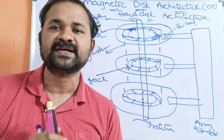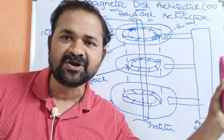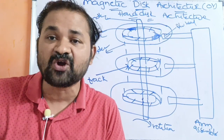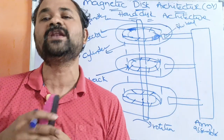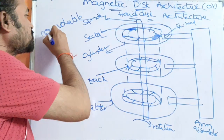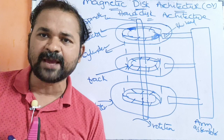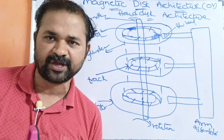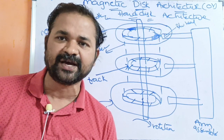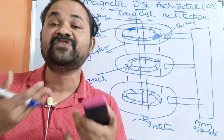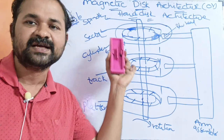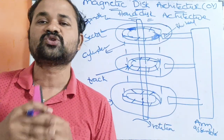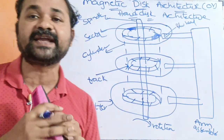Hard disk is also called as a secondary storage device because we can store data permanently in the computer. That means if we switch off the computer, then the contents of the hard disk won't be lost. Hard disk is also called as non-volatile memory. We have two types of memory: volatile memory and non-volatile memory. Main memory or RAM is called as volatile memory because when we switch off the computer, the contents of RAM will be lost. But the contents of the hard disk won't be lost — the data permanently resides in the computer. That's why hard disk can also be called as non-volatile memory.